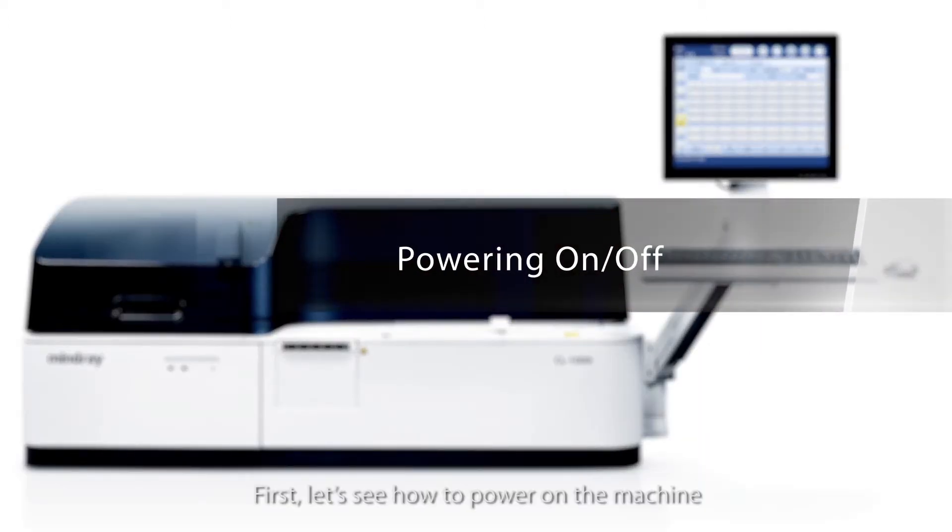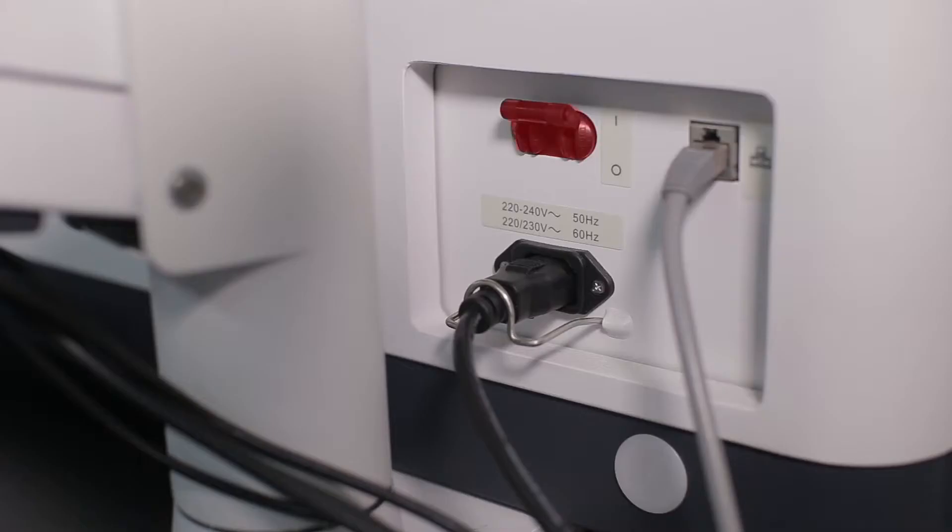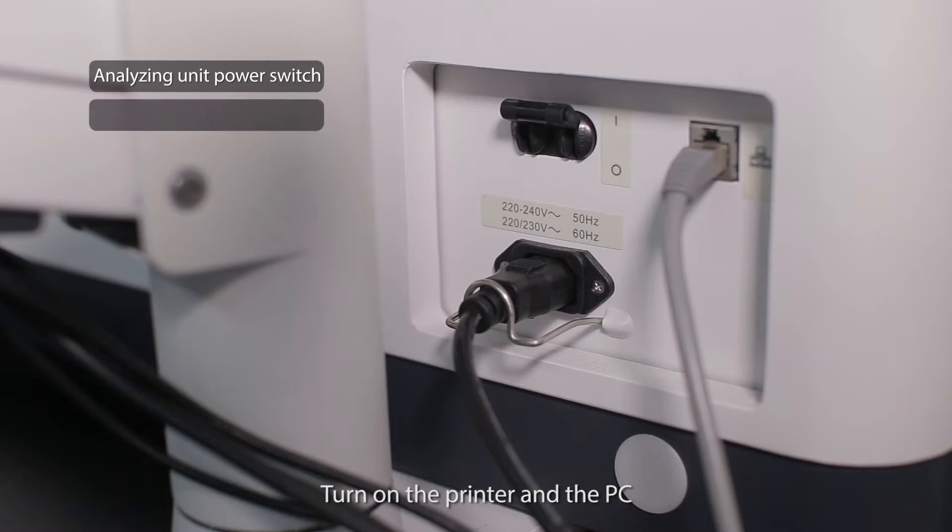First, let's see how to power on the machine. Turn on the analyzing unit power switch. Turn on the printer and the PC. Enter the operating software and log in.